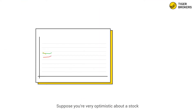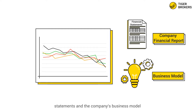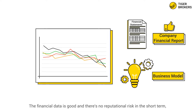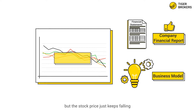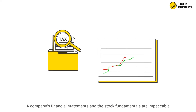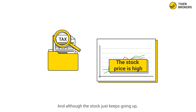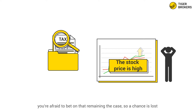Suppose you're very optimistic about a stock, you've done detailed research on the financial statements and the company's business model. The financial data is good and there's no reputational risk in the short term, but the stock price just keeps falling. Or take another example: a company's financial statements and stock fundamentals are impeccable, the stock price is high, and you're afraid to buy it. Although the stock just keeps going up, you're afraid to bet on it — so a chance is lost.